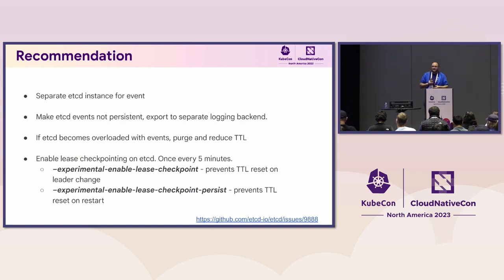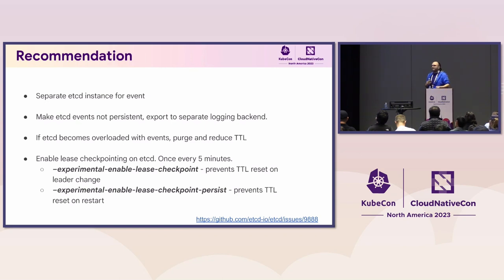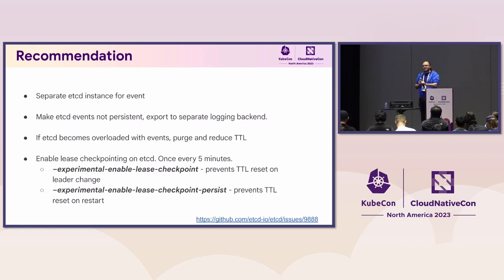A new feature introduced about a year ago is lease checkpointing — a direct fix in etcd to make the Kubernetes use case more reliable. It has two iterations. The first prevents leader elections from resetting TTL, by having the leader send an update every five minutes to other members: 'I counted down five minutes, please remember this and reduce your TTL.' The second iteration adds persistence — so if your whole etcd cluster goes down, the checkpoint is saved not just in memory but also on disk, ensuring the TTL is persisted even after a full restart.